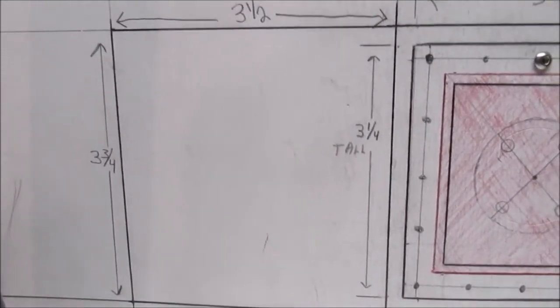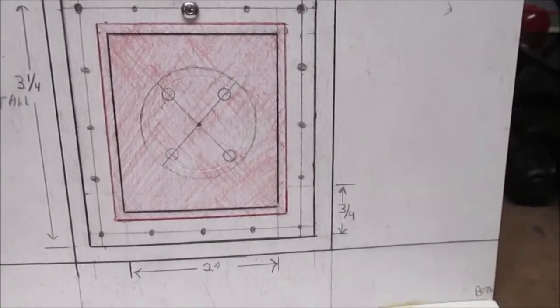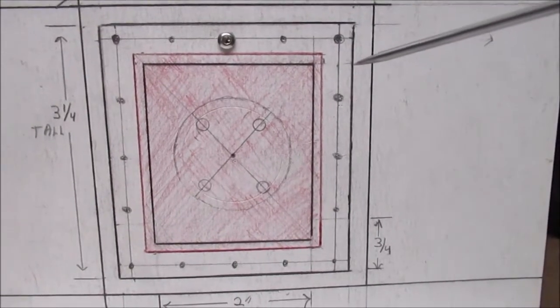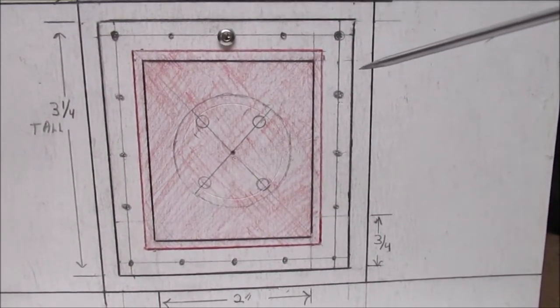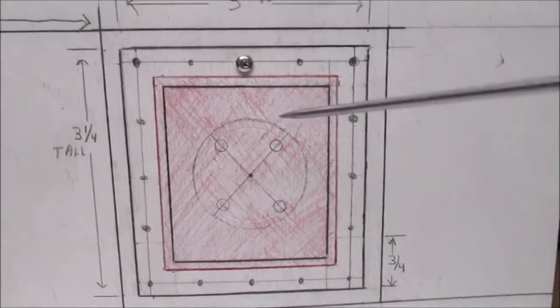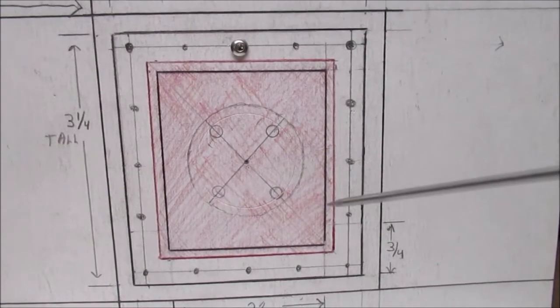We got a quarter inch clearance here coming in for the door. The red is the door which overlaps about an eighth of an inch, and I got it marked out for the bolts. Now here's your tricky part.